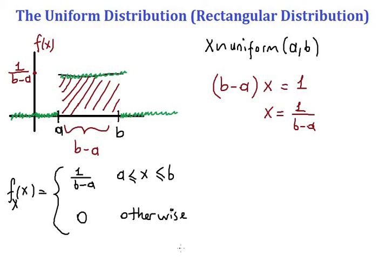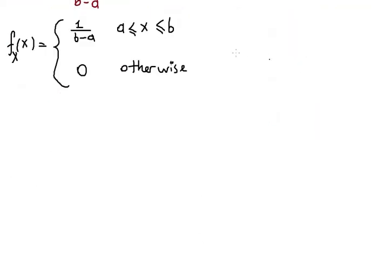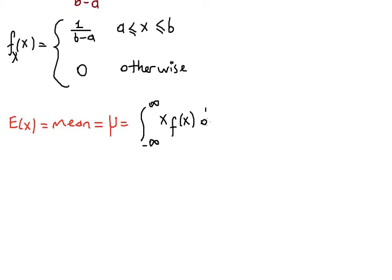Now let's find the expectation and the variance. The uniform random variable is a continuous random variable. By definition, the expectation, or mean, denoted by the Greek letter mu, is the integral from negative infinity to positive infinity of x times the density function dx.